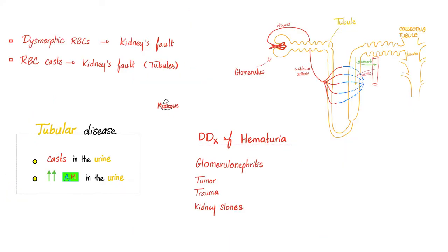Where are the red blood cells coming from? They could be coming from the urethra, from the urinary bladder, from the ureter, or from the kidney. And even in the kidney, they could be coming from the tubules or from the glomeruli. When we see red blood cell casts in the urine, we can blame the kidney tubules — not the urethra, bladder, or ureter. When we see dysmorphic red blood cells, it's usually the kidney's fault, and most of the time it's the glomerulus.